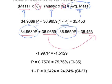So, finishing up the math, we divide both sides by negative 1.997, and we get p is equal to 0.7576, which, remember, it's a percentage, so that's just 75.76%, and that's chlorine 35.